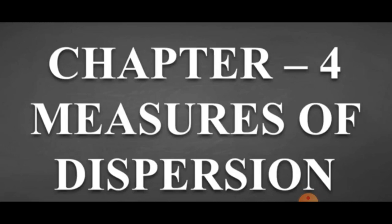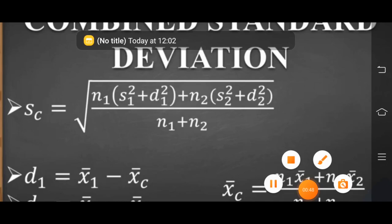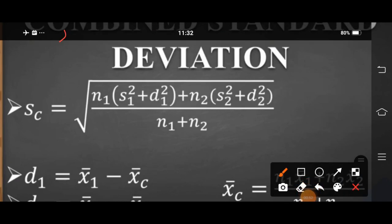In Combined Standard Deviation, if mean, standard deviation, and number of observations of two groups are given, then the standard deviation obtained for the combined group is called Combined Standard Deviation. It is denoted by Sc, equal to the under root of: n1 — the number of observations of the first group — then s1 squared plus d1 squared. Here d1 equals mean of the first group minus combined mean.